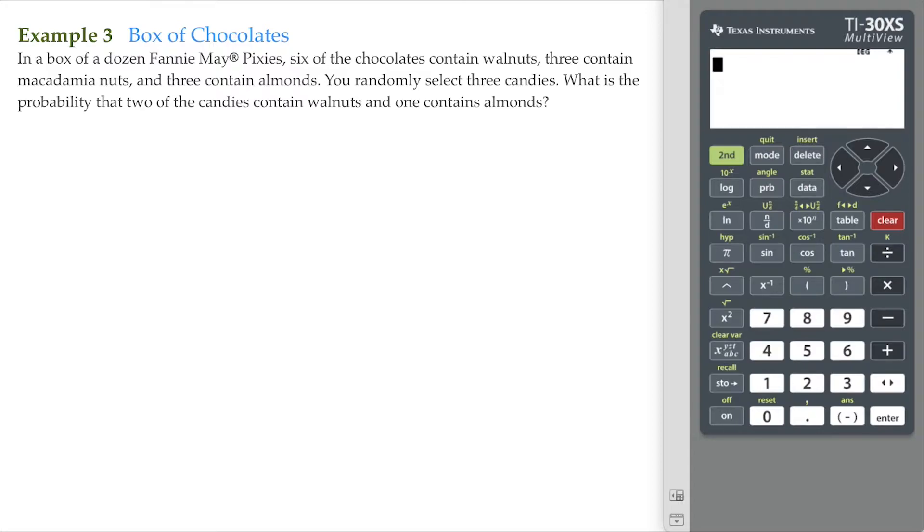You randomly select three candies. What is the probability that two of the candies contain walnuts and one contains almonds? Don't forget that as we tabulate our probabilities, that's going to be A over B. A is the event in question, and B is the size of the sample space.